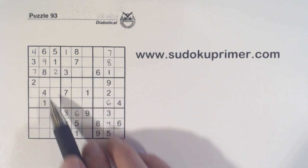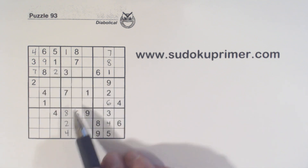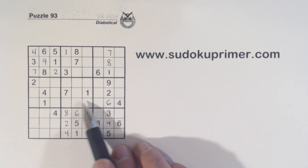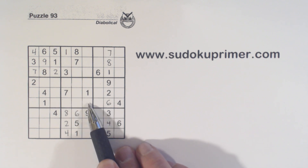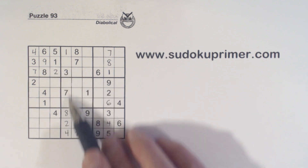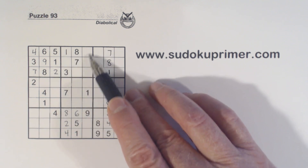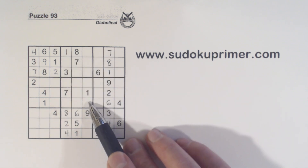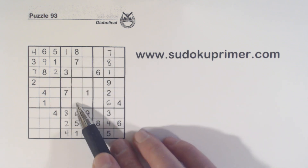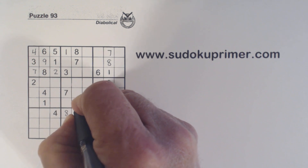We've got a two here, two here, and two here, so one of these has to be a two in box five. And with this two and this two, we know there are ghost twos there. So that can't be a two — so we know the two goes right there.